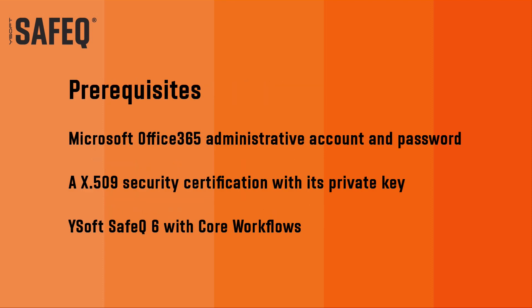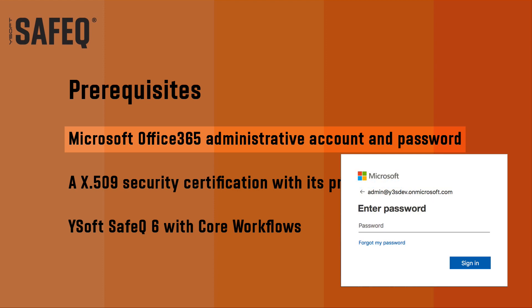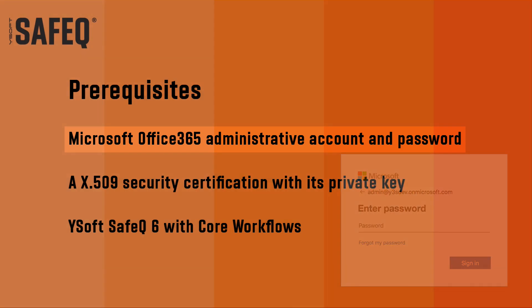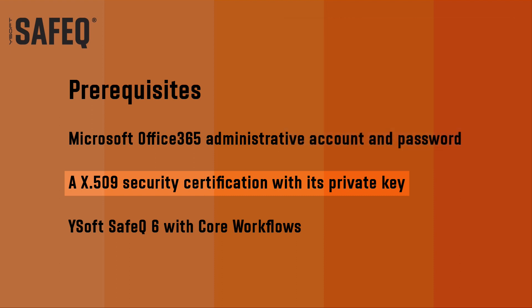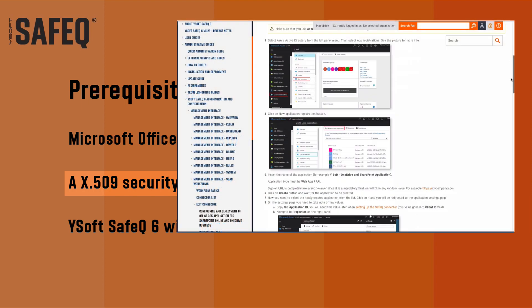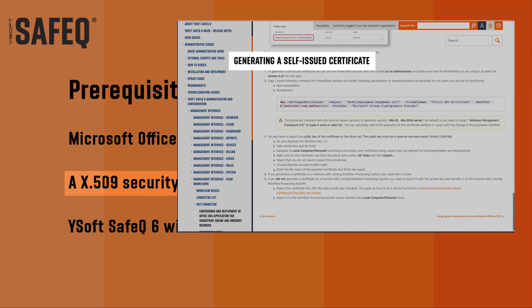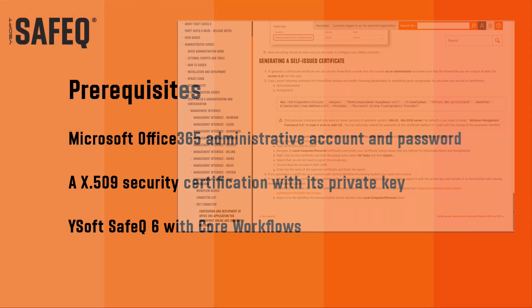Before we start, there are three prerequisites needed: a Microsoft 365 administrative account and password; an X.509 security certificate with its private key. If you don't have any valid company certificate, you can generate a self-issued certificate — follow the generating a self-issued certificate section of the administrative guide.